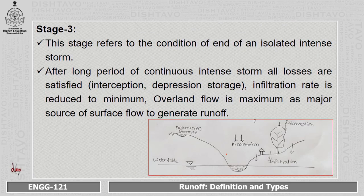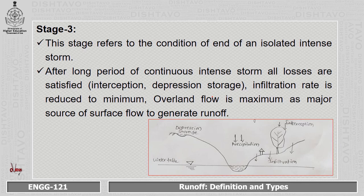Stage 3 refers to the condition at the end of an isolated intense storm. After a long period of continuous storm, all losses — that is, interception and depression storage — are satisfied, meaning there is no further loss due to these factors. The infiltration rate is also reduced to a minimum because all the pores in the soil are saturated. As shown in this diagram, overland flow is maximum here because losses are minimum and all depression and interception storages are saturated.